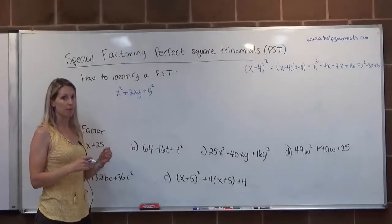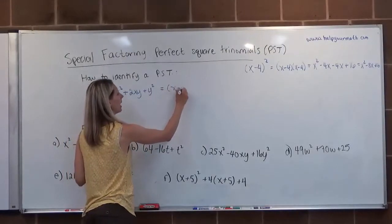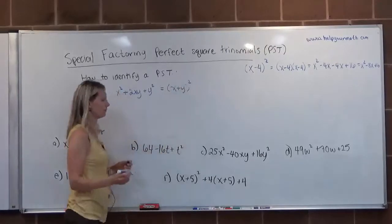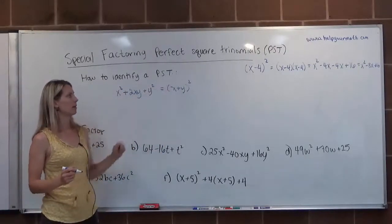That's how we know we have a perfect square trinomial, and this will factor into x plus y quantity squared. This is when we have addition, so that's not what we saw in the example I just put up.